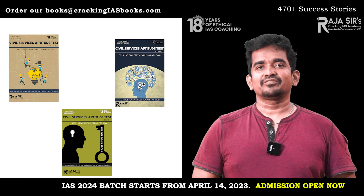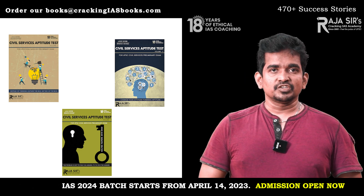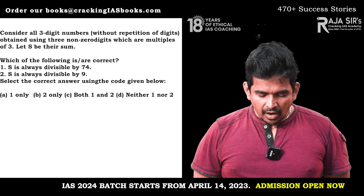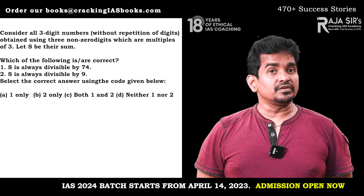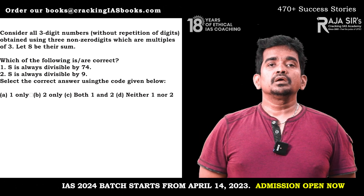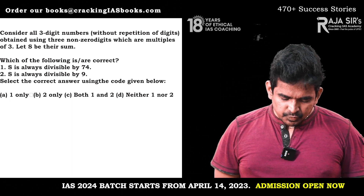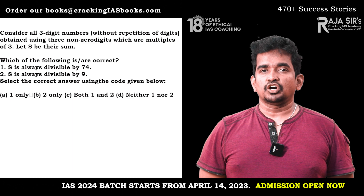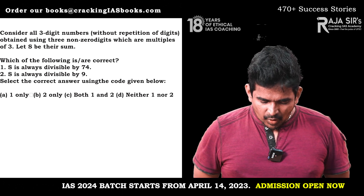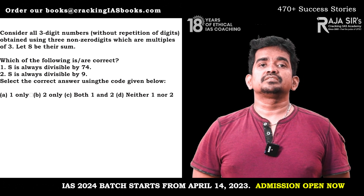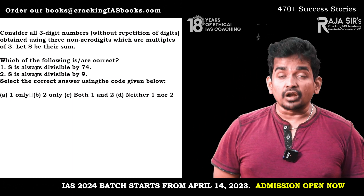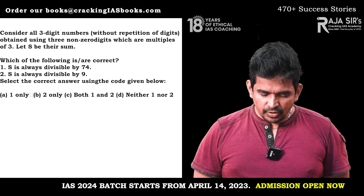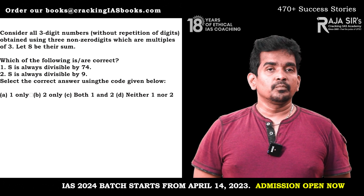The first problem: Consider all three-digit numbers without repetition of digits, obtained using three non-zero digits which are multiples of three. Let S be their sum. Which of the following is/are correct? One: S is always divisible by 74. Two: S is always divisible by 9. Select the correct answer — one only, two only, both one and two, or neither one nor two.